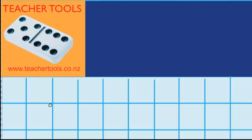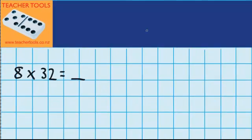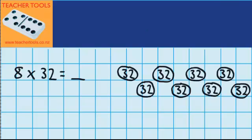Let's imagine there's 8 classrooms and in each of those classrooms there's 32 students. I want to work out how many students there are in total. Over here you can see I've got my 8 groups of 32.